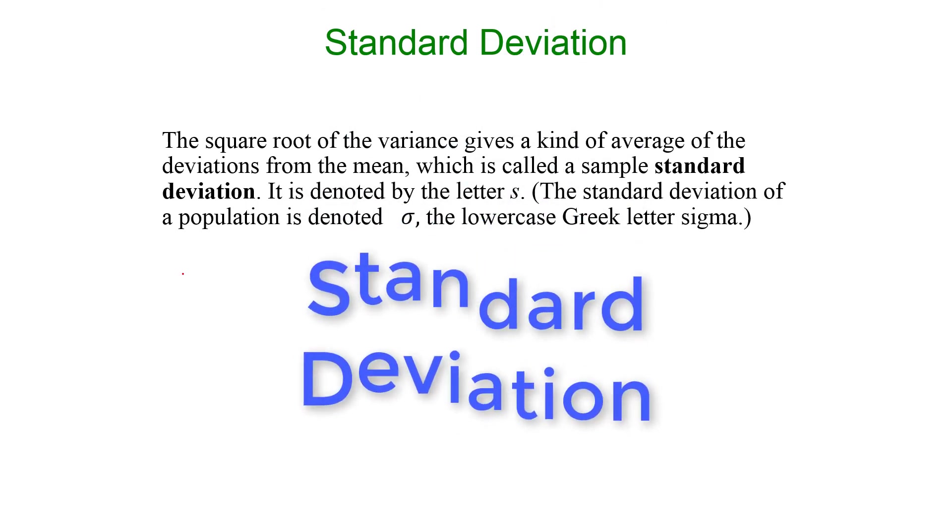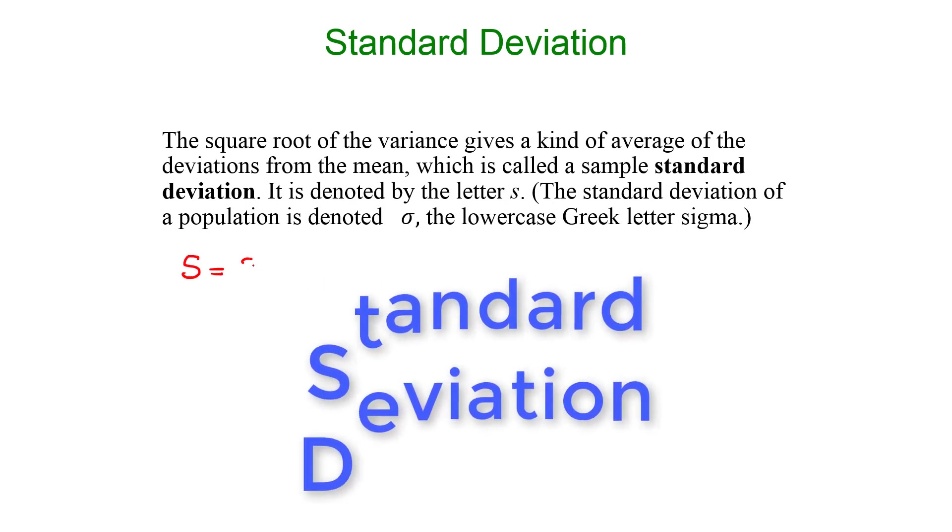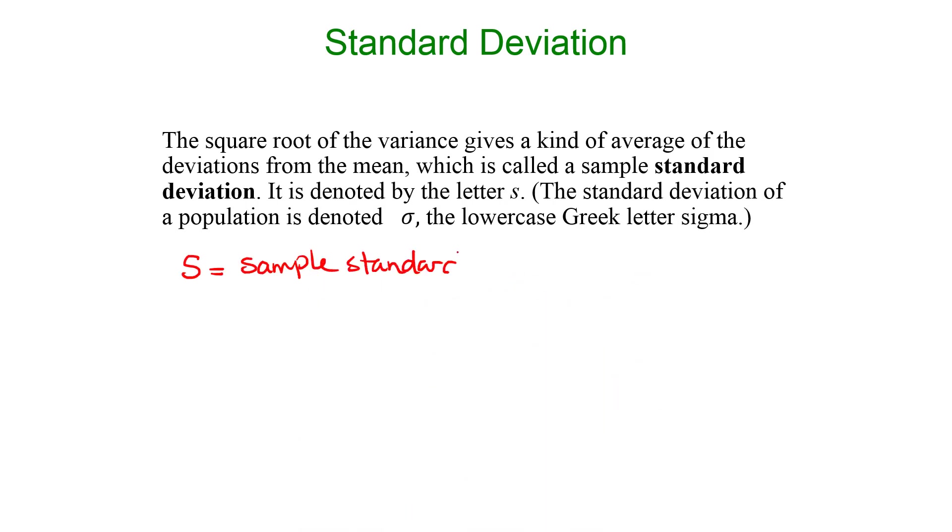S represents the sample standard deviation. So of course we need a symbol for that's a statistic, right? Because it's referring to a sample. The corresponding population standard deviation, the parameter, is sigma.